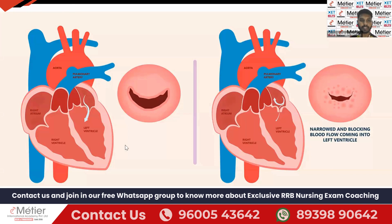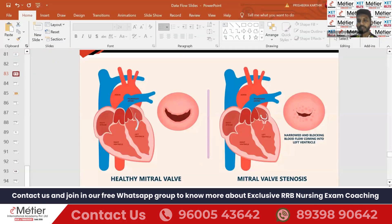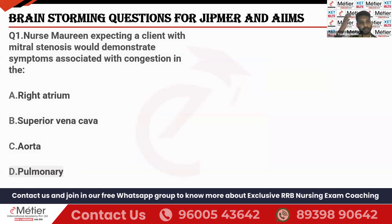I'll show the picture. This is a normal mitral valve, between the left atrium and left ventricle. When there is stenosis — occlusion happening in the mitral valve — the blood cannot flow from the left atrium to the left ventricle. So the blood flow will go back to the pulmonary veins and into the lungs. Automatically the patient's lungs will get fluid.